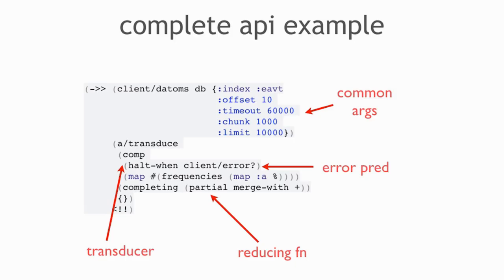We're going to transduce over these results and transform each result first by calling HaltWin. HaltWin is a transducing function that will immediately interrupt the transduction and return the current value if it matches that predicate. This is one reason why having things come back as data is valuable: you can run along, transduce, and as soon as you hit an error, just get the error back as a map instead of whatever you were looking for.